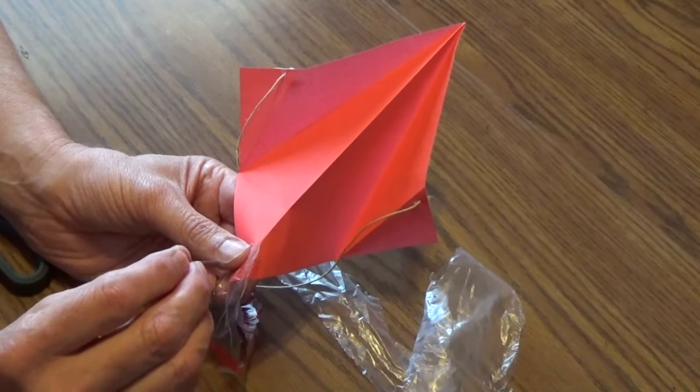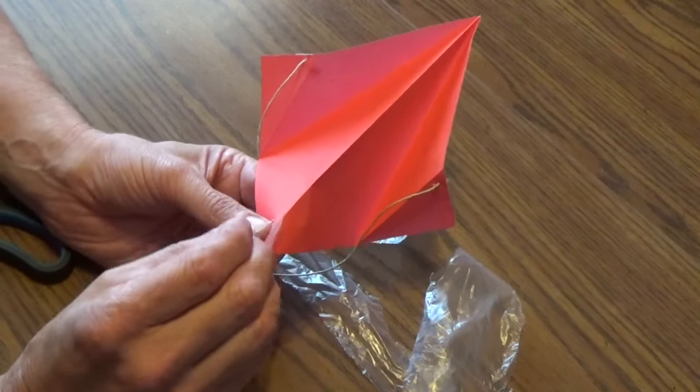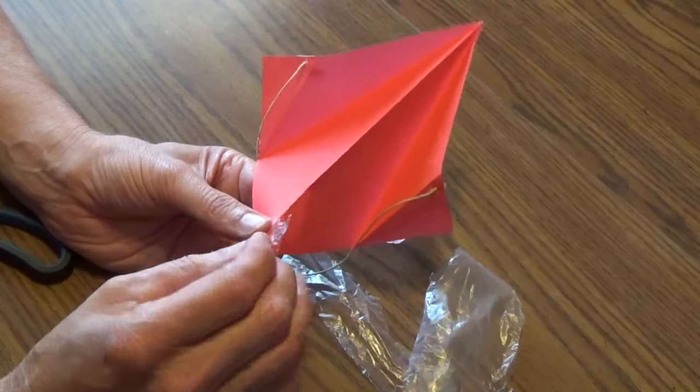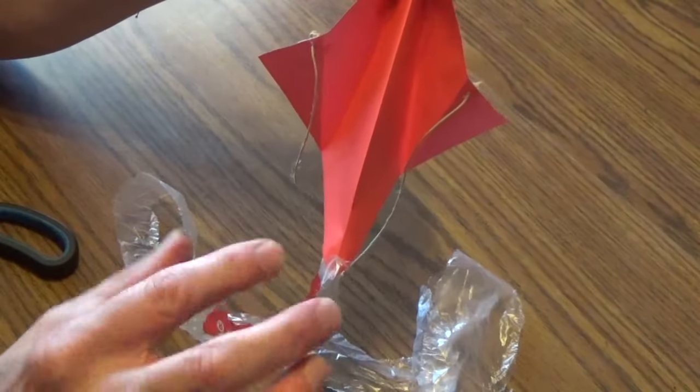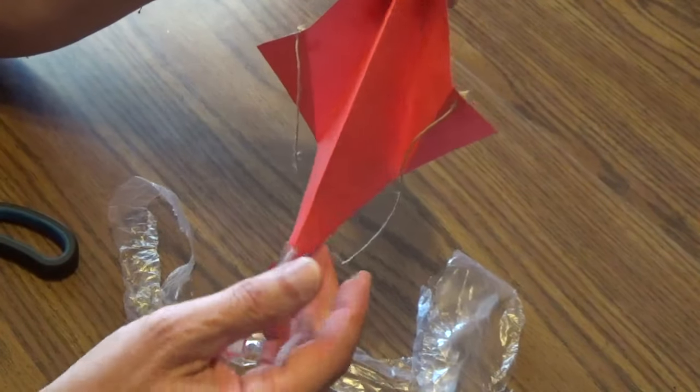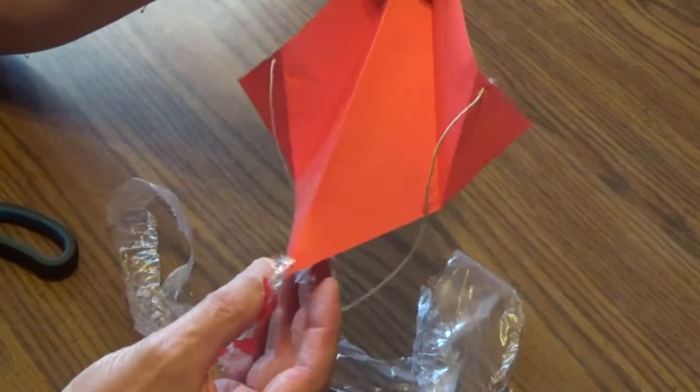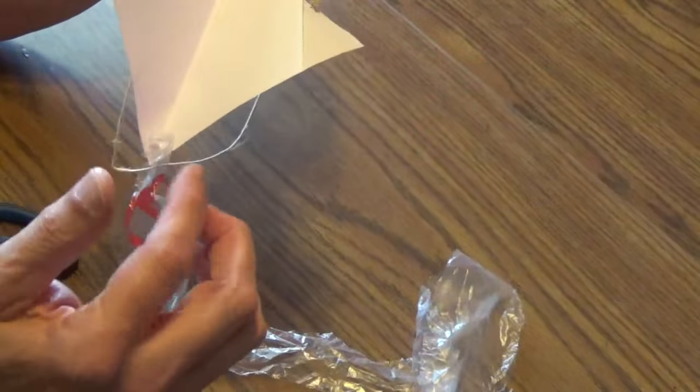The harder part will be getting the tail stuck through this hole at the bottom. So we'll use our nail and try to get it to go through. And with just a little poking and twisting I got the tail through there. And I'm going to put a piece of tape on the back of that to hold it in place.